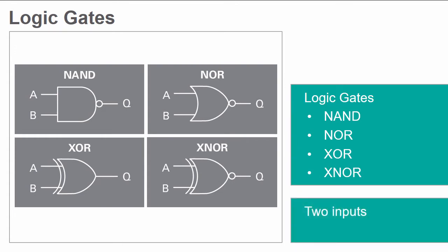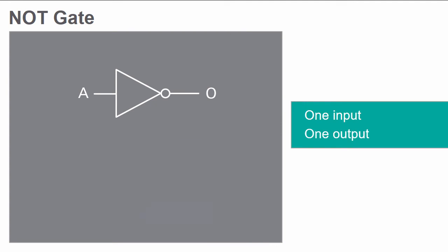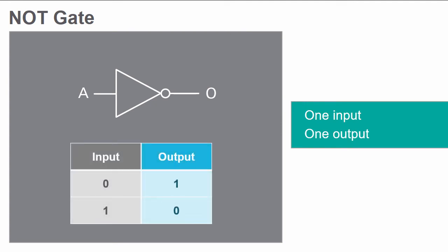Each of these gates has at least two inputs, one output, and a unique truth table. Unlike the other gates, NOT gates have one input and one output. Since the NOT gate output is the inverse of the input, the truth table of a NOT gate is simple.